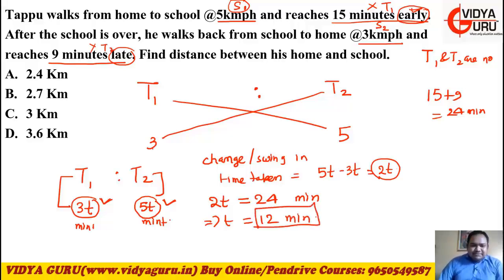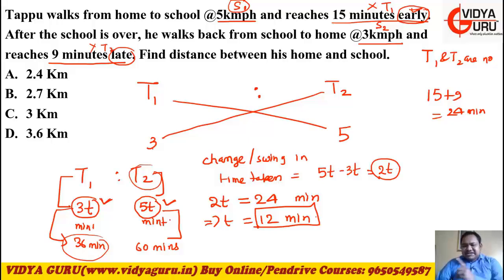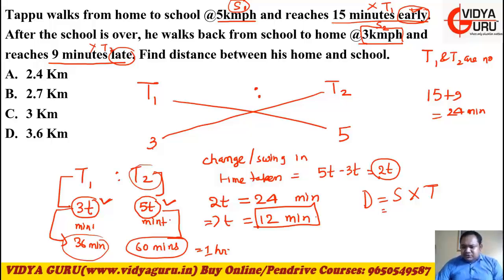If T equals 12 minutes, then 3T equals 36 minutes and 5T equals 60 minutes. So in case one he took 36 minutes, in case two he took 60 minutes. The question asks to find the distance between his home and school. Distance equals speed multiplied by time. Sixty minutes equals one hour. Choosing case two: speed is 3 km per hour, time is 1 hour, so distance equals 3 km.